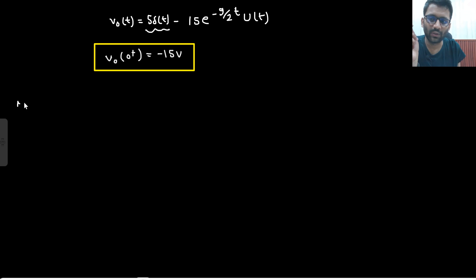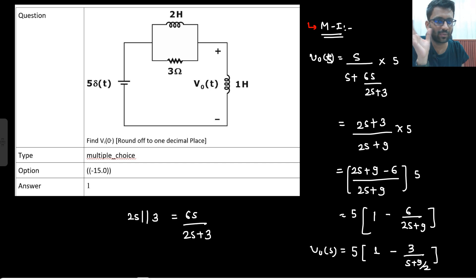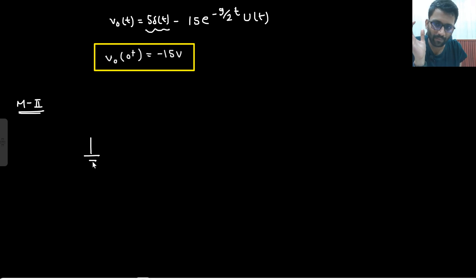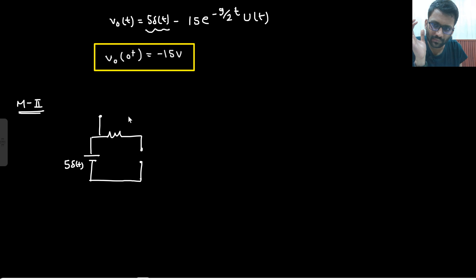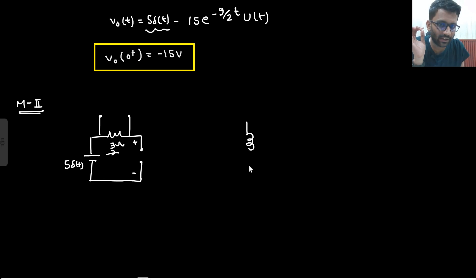Let us see Method 2 — the intuition approach without applying the Laplace transform. Initially, what will be happening with the inductors? They will be open-circuited, because they are not having any current initially. This is 5δ(t), and 3 ohm is there. This complete 5δ(t) will come across the 1 Henry inductor because if the inductor is open-circuited, there is 0 ampere current flowing through it, so all of 5δ(t) appears across the 1H inductor.